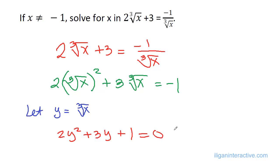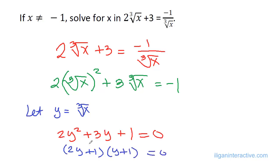So we just need to factor this. Applying factoring by guessing: (2y + 1)(y + 1) = 0. The middle term will be 3y plus 1 — you need to check that by FOIL multiplication.